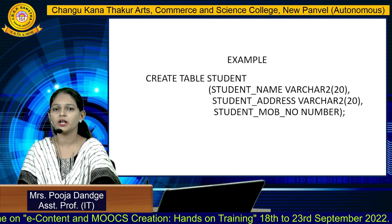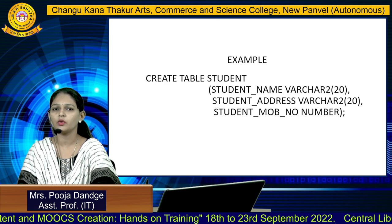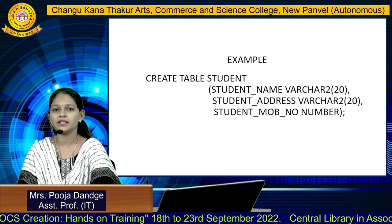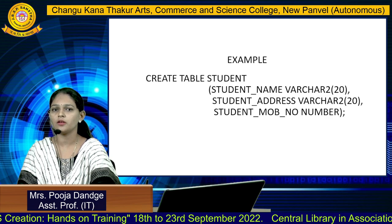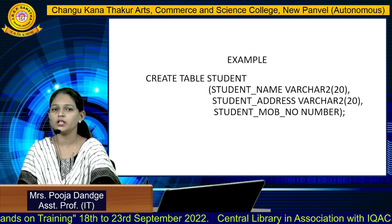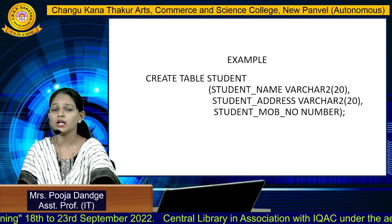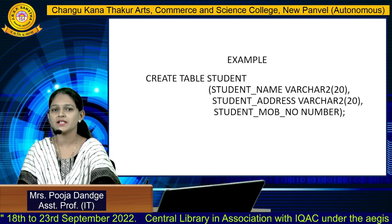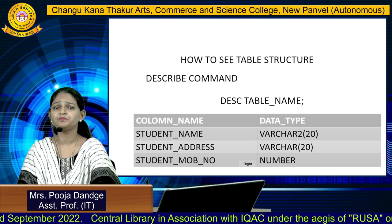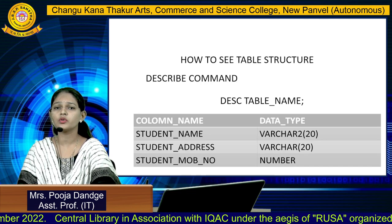The second column is the student address column — same VARCHAR data type. The third column is the student mobile number, which will include only a number value, so I have to take NUMBER as the data type.